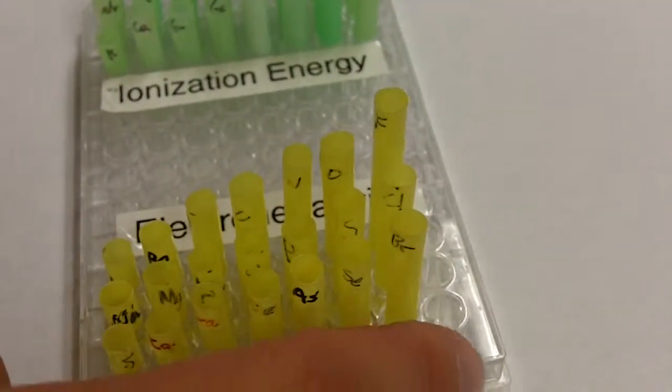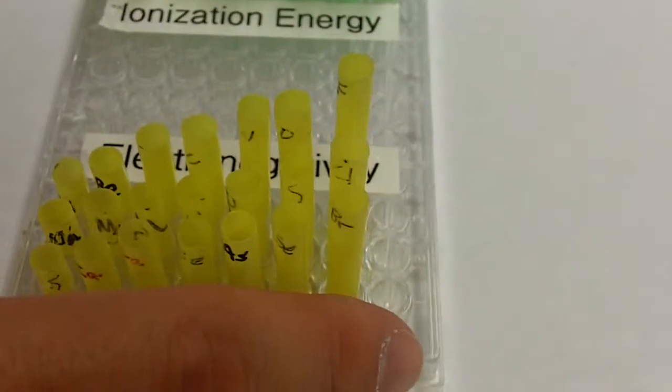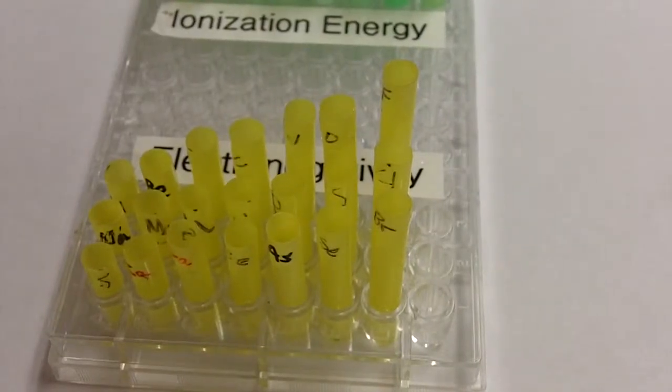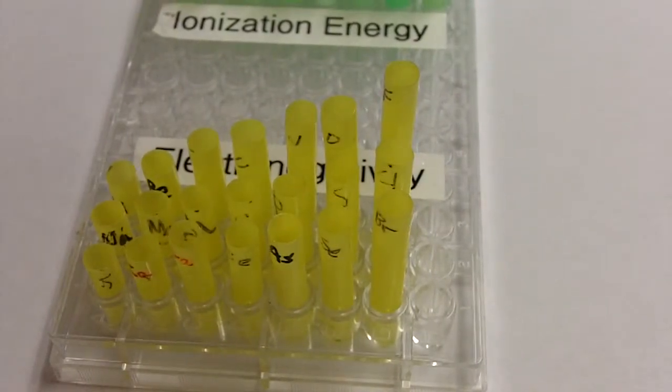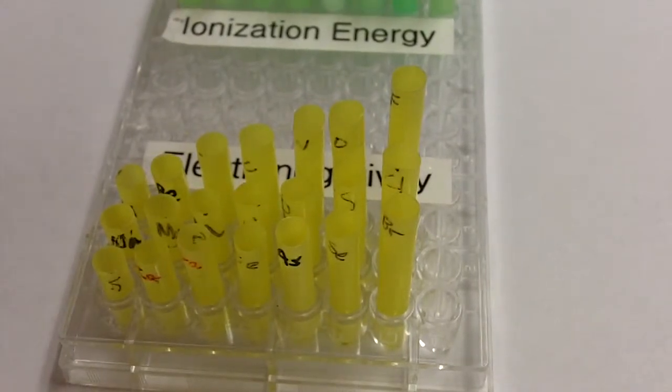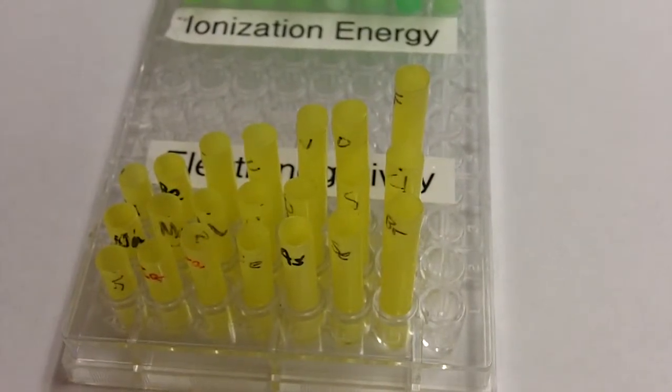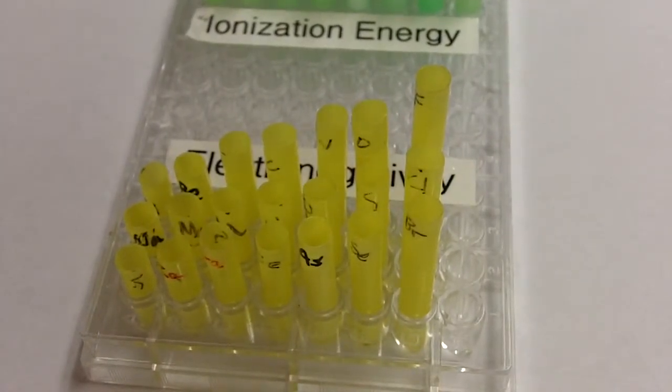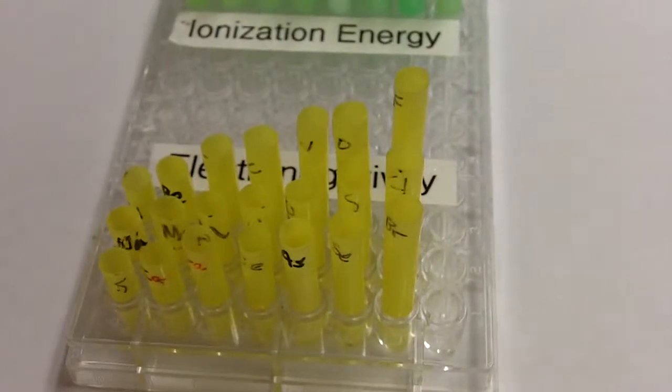But notice which family is missing here on the very end. There are no noble gases. And the reason why this is the case is because noble gases already have a full valence shell. So if you're talking about ability to attract an electron, they really have nowhere to put it. They've already got their eight valence electrons, except in the case of helium, which has two. But they don't have any room to attract any electrons. So their electronegativity is effectively zero.